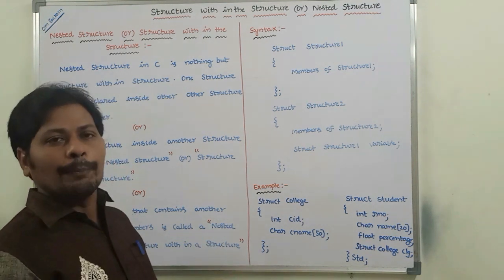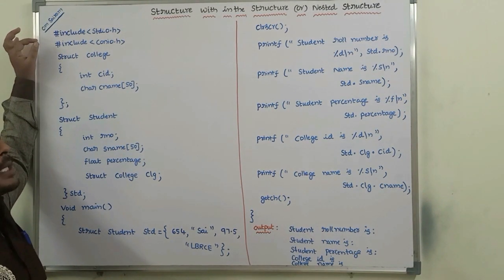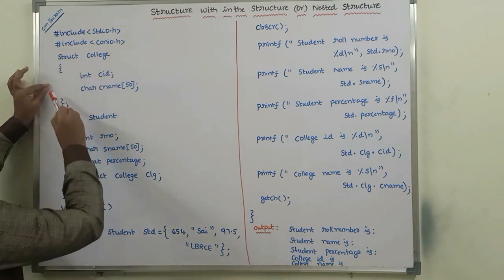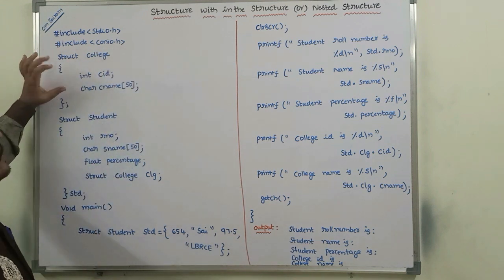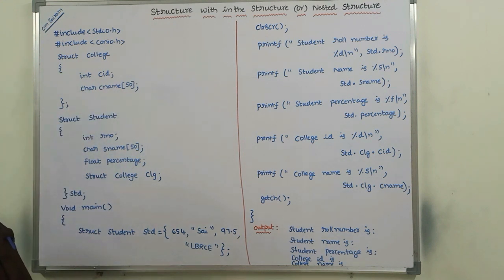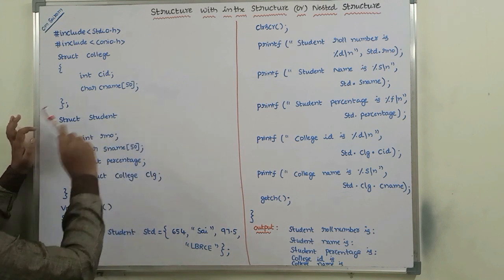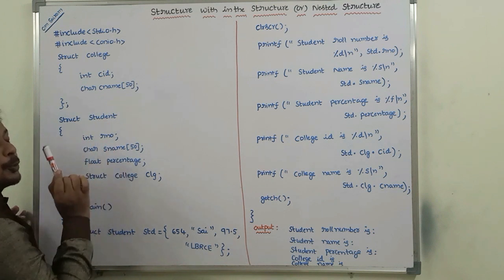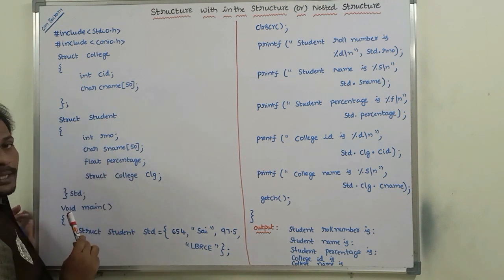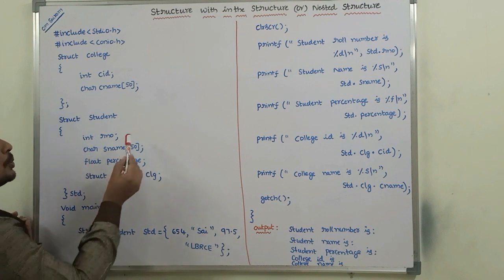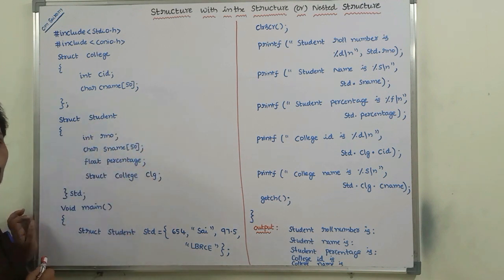Now we can go for the example program. This is the example program on structure within the structure. As discussed, this is the college structure containing two data members: college ID and college name. This is the student structure containing data members: roll number, student name (SName), and percentage — these are the three data members of the student structure.